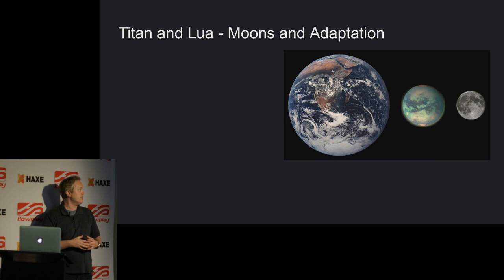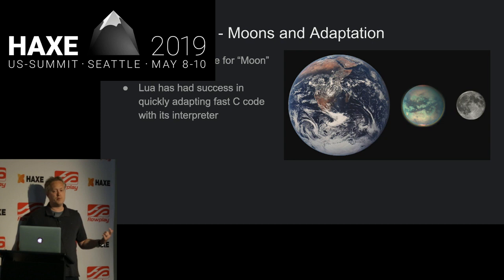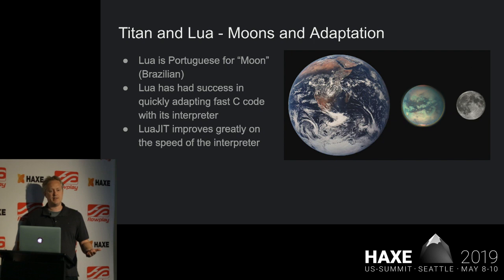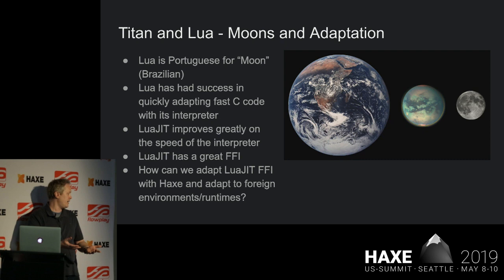One of the themes here is moons and adaptation. I'm working with Lua — Lua is Portuguese for moon, it came out of a Brazilian research group. It's had a lot of success in quickly adapting C code with its interpreter, built as a scripting layer on top of C. There's another implementation called LuaJIT which greatly improves the speed and was way ahead of its time in terms of achieving V8 speeds for an interpreted JIT language years before that hit the scene. It's got this great FFI, which I'll talk about — the question being: how can we adapt LuaJIT FFI with HAXE and adapt to foreign environments and runtimes?